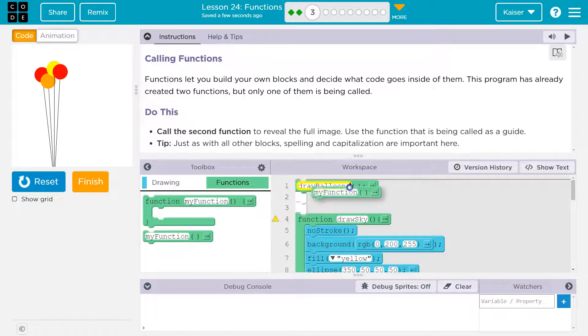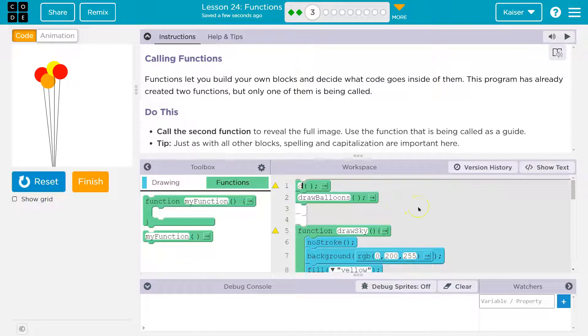So now I have draw balloon because I deleted the original one, but I think what they're going to ask is draw sky, and so what will run first? Functions are going to run in order when you call them. So here I call draw sky, and it will draw blue sky, and now I'm going to call draw balloon.